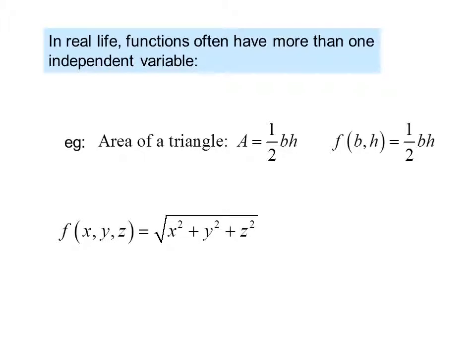f of x, y, z equals radical x squared plus y squared plus z squared could be interpreted as the length of the diagonal of a box.